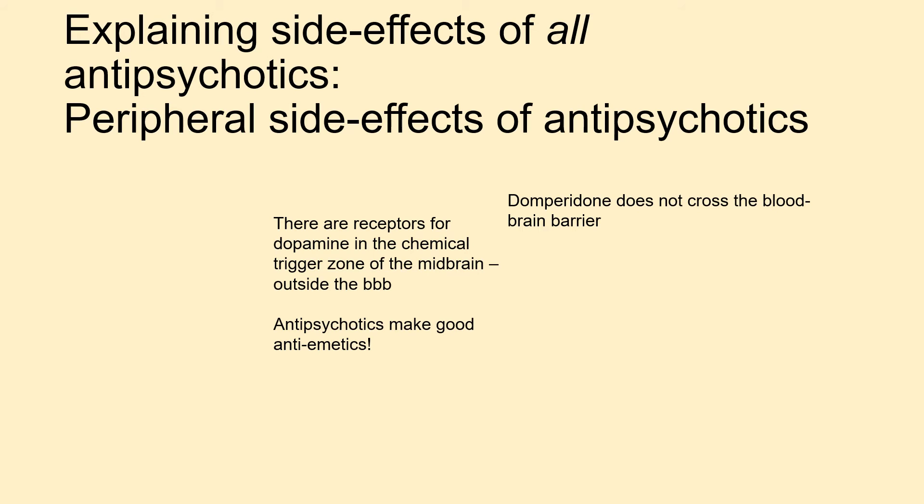All antipsychotics share broadly similar side effect profiles. For instance, dopamine receptors in the chemoreceptor trigger zone of the midbrain mean antipsychotics are actually useful antiemetics — so patients prescribed them for nausea sometimes need careful explanation. Domperidone is a D2 antagonist that doesn't cross the blood-brain barrier, making it a clean antiemetic.